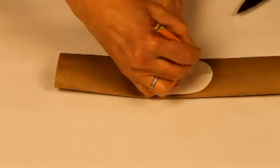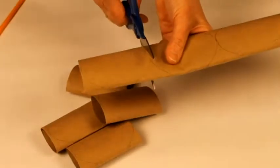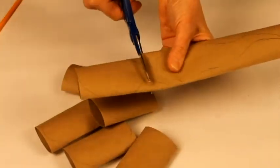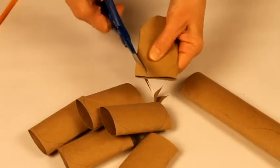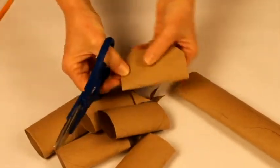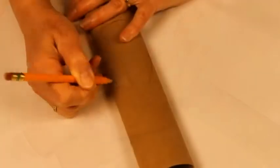The length of your snake will depend on how many tube sections you use. If you can find a tube a little wider in diameter for the head, use it to show that the head is a little wider than the rest of the body, but that is not absolutely necessary to create your snake.